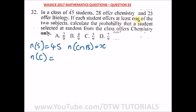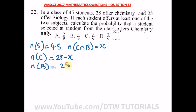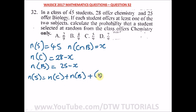One person can offer two subjects or only one. The number of students that offer chemistry alone is 28 minus x, where x is the intersection. The number of students that offer biology alone is 25 minus x. Using our set formula, the total number of students equals n(chemistry only) plus n(biology only) plus n(C intersection B).